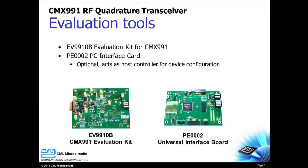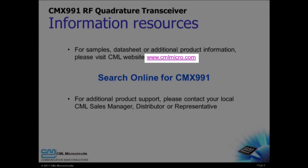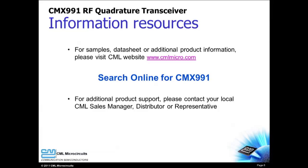Evaluation tools are available for the CMX991, consisting of the EV9910B evaluation kit. The PE-002 PC interface card and its graphical user interface make CMX991 evaluation fast and simple. Please visit the CML website to learn more about the CMX991 or to request samples or an evaluation board. Thank you for watching the introduction video of the CMX991 RF quadrature transceiver from CML Micro Circuits.